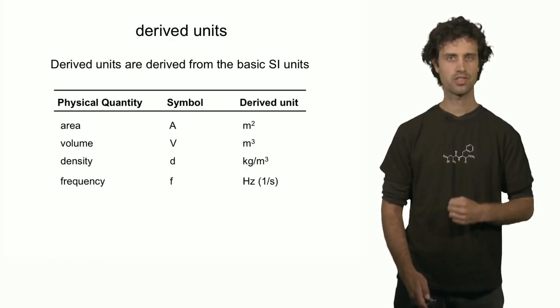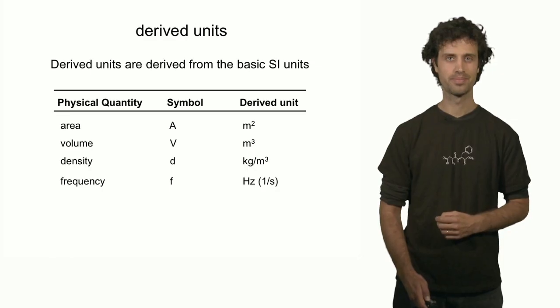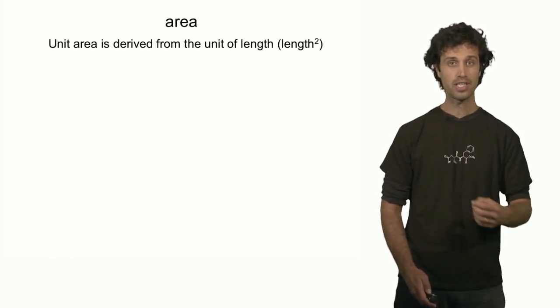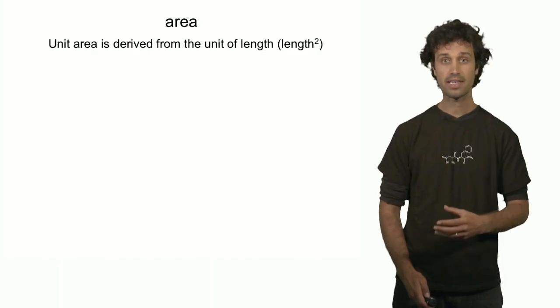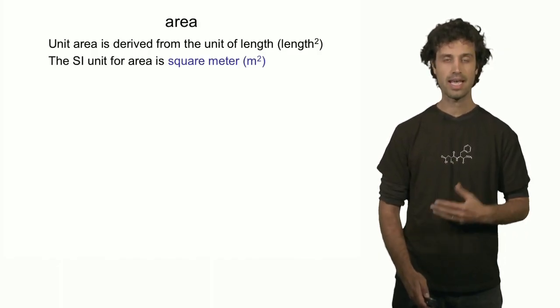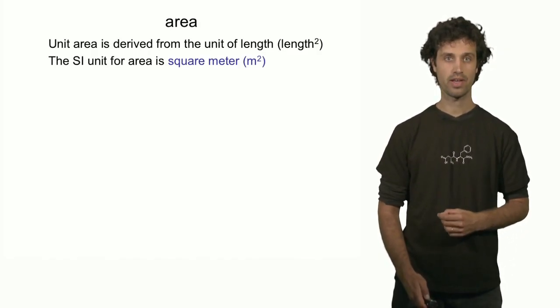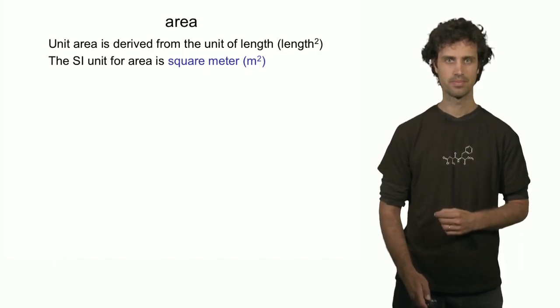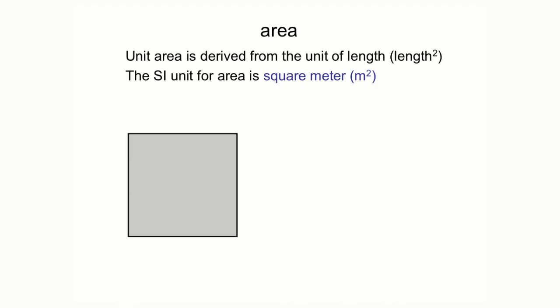So let's discuss these derived units one by one. The unit of area relates to the unit of length — in fact, it is length squared. In the SI system, the unit for area is the square meter, or meter to the second. Now let's consider a square which has sides of 1 meter. The area of this square is 1 meter times 1 meter, and that equals 1 meter squared.